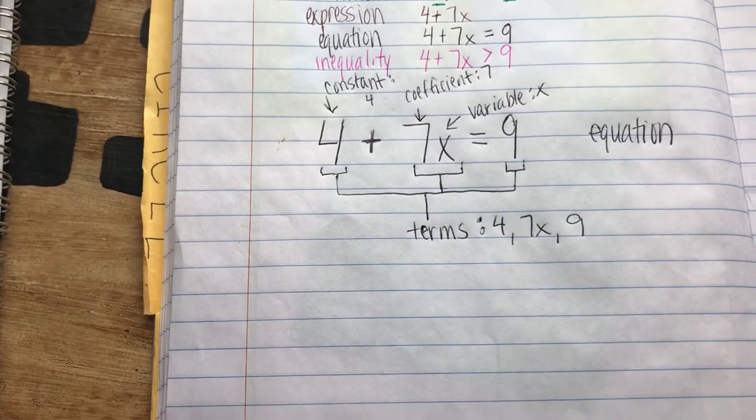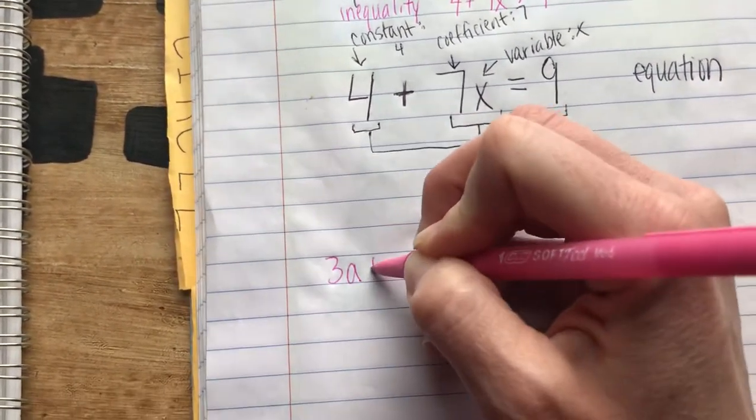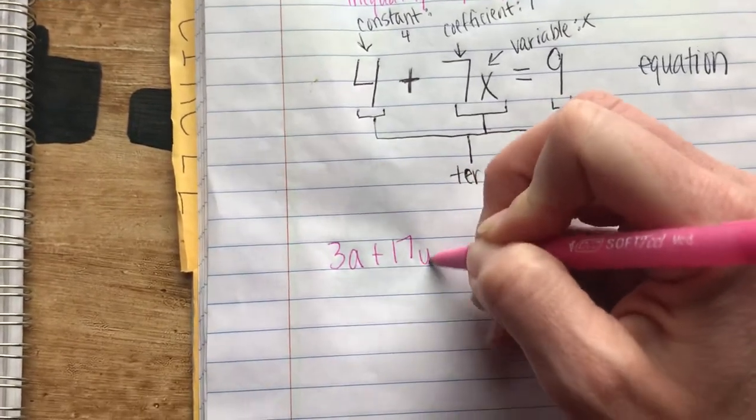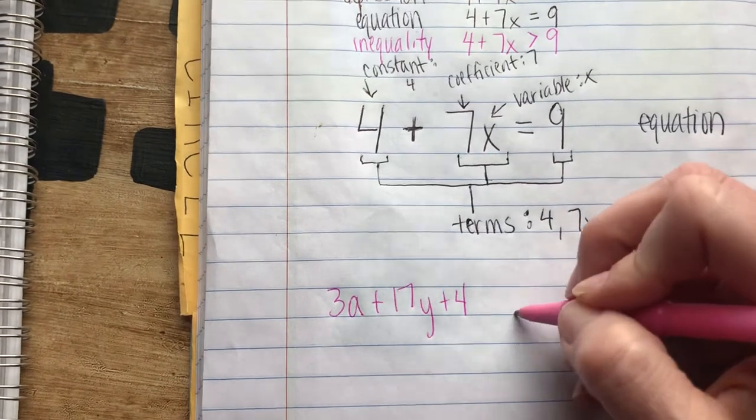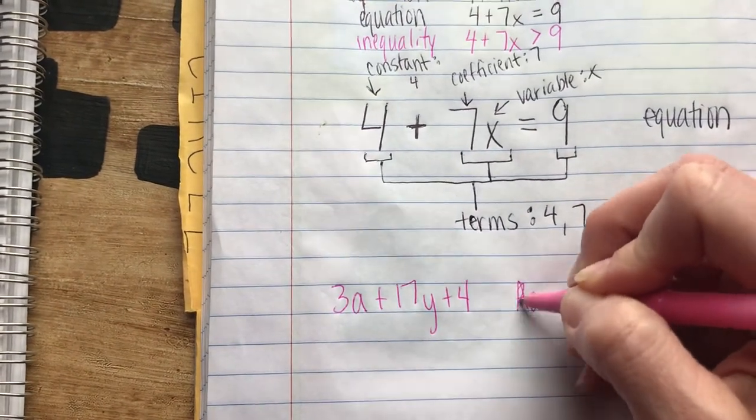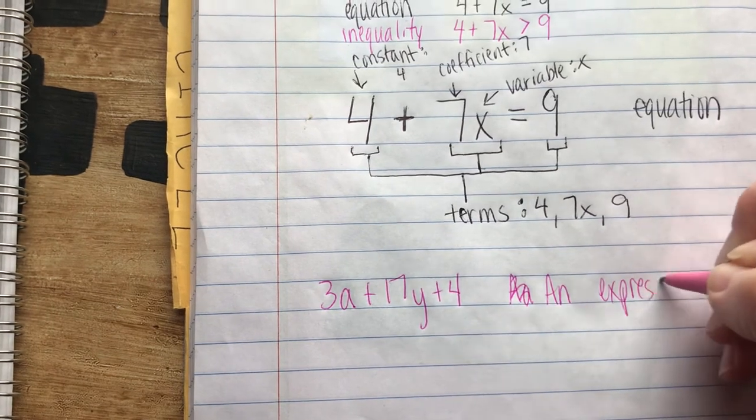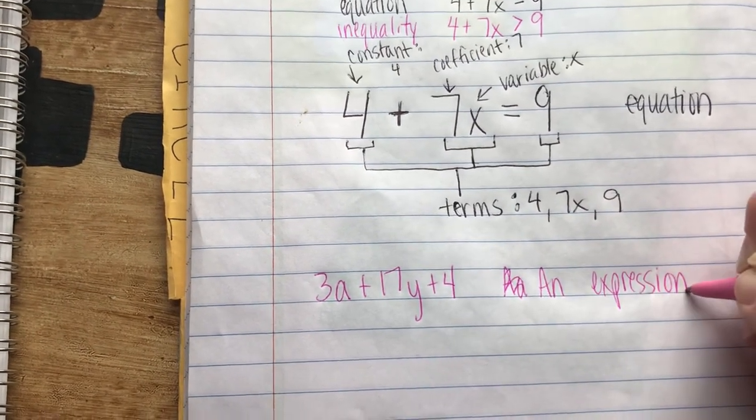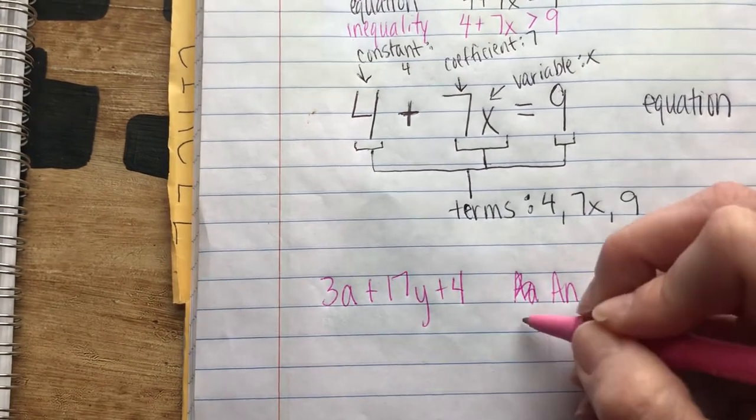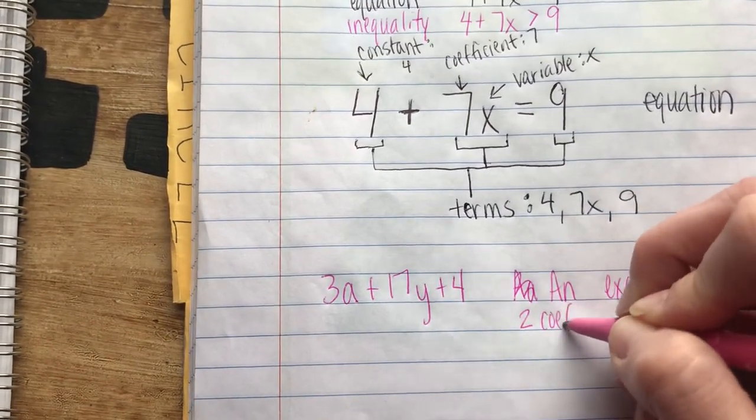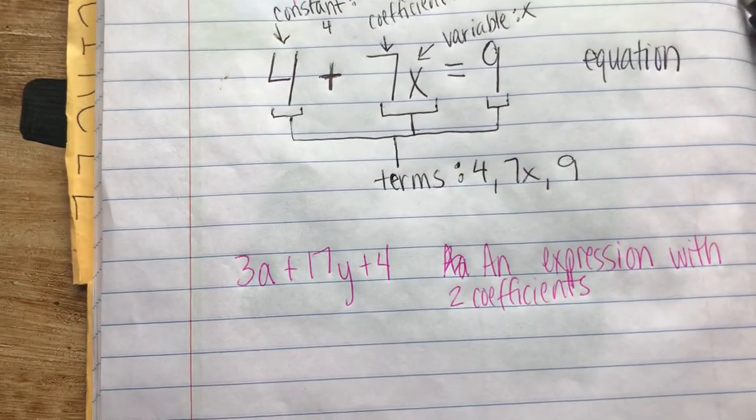Finally, I could write something like 3a plus 17y plus 4 and write a sentence about this. I could say that this is an expression because there's no equal sign, so it's not an equation, with two coefficients—the 3 and the 17,